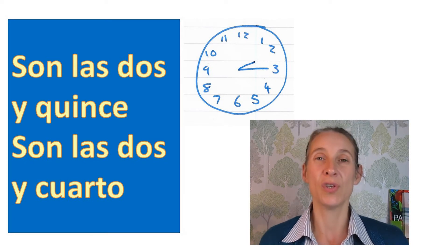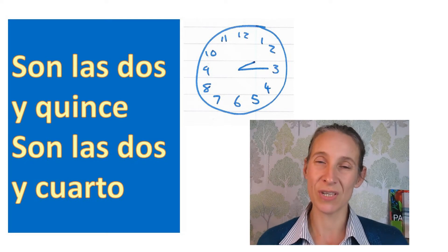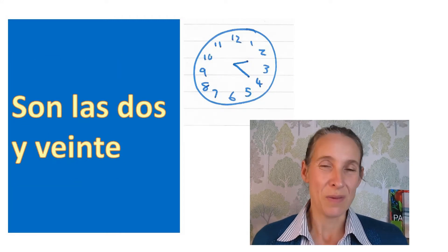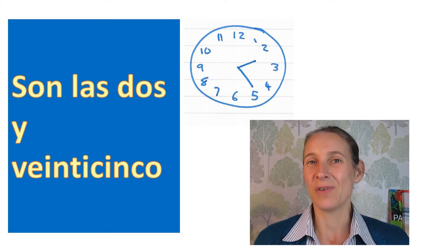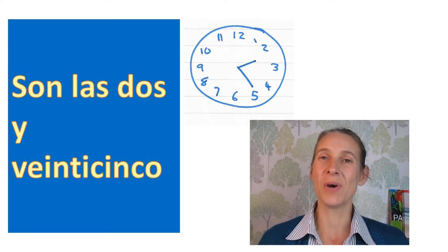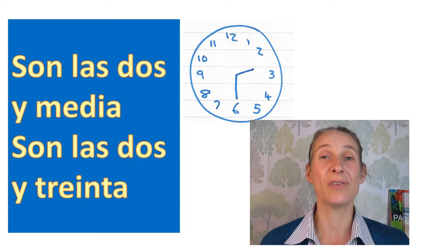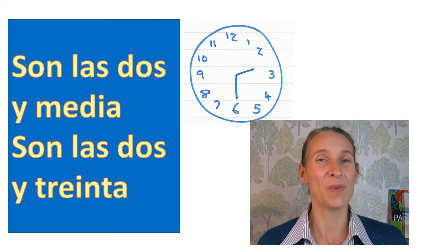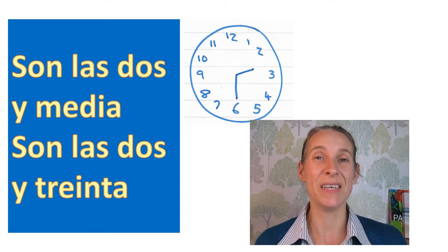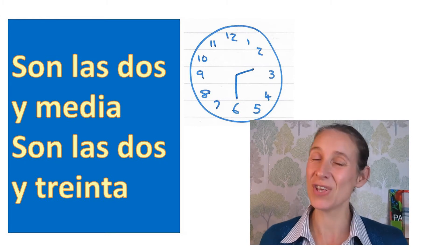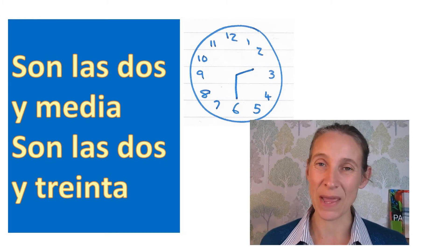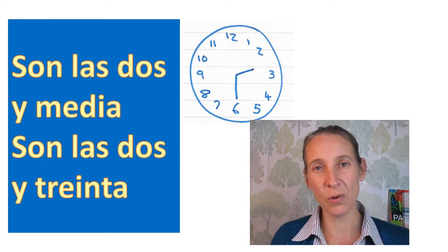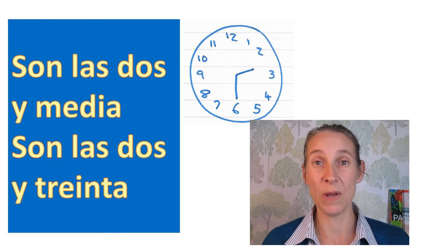Son las dos y veinte, son las dos y veinticinco, son las dos y media — o son las dos y treinta. You can say it either way. Then you can carry on counting all the way around with y meaning 'and' — so son las dos y treinta y cinco.